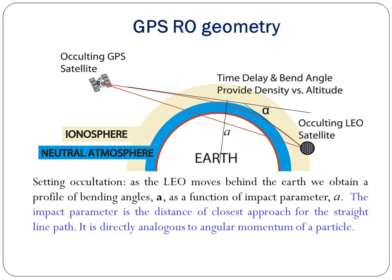In a setting occultation, as the low earth orbiting satellite moves behind the earth, we obtain a profile of bending angles alpha as a function of the impact parameter. The impact parameter is the distance of closest approach for the straight line path, directly analogous to the angular momentum of a particle.